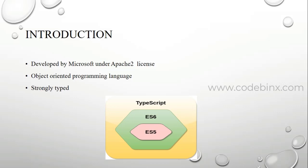JavaScript uses object-based concepts, but TypeScript uses full object-oriented programming. TypeScript is not a scripting language — it is a programming language. This is the major conceptual difference between ES6 JavaScript and TypeScript. In JavaScript we do client-side work. In TypeScript, we use both client side and server side to build a total, full-fledged application.